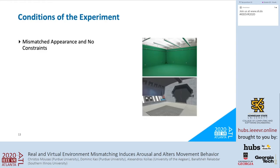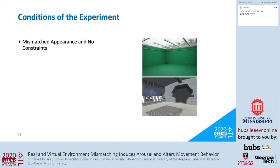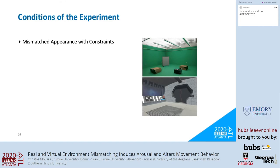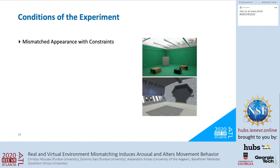The first condition is 'matched appearance and no constraints,' our baseline, where the virtual environment is a replica of the real environment with no obstacles in either. The second condition is 'mismatched appearance and no constraints,' presenting an imaginary environment with no obstacles in either real or virtual environments. The third condition is 'mismatched appearance with constraints,' using the imaginary environment with obstacles such as carton boxes and a notice board placed in the real environment, which do not appear in the virtual environment; participants were aware of these obstacles before the experiment.